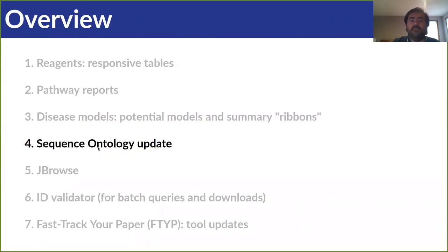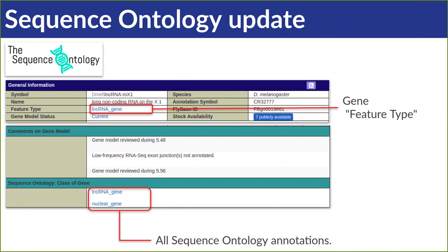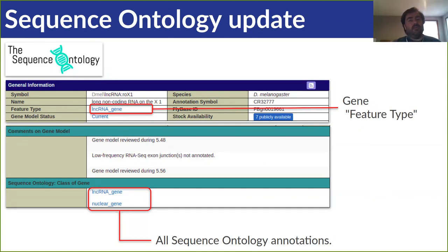Now I'll tell you about updates to the sequence ontology at Flybase. The sequence ontology is a set of controlled vocabulary terms used by many biological databases to annotate and classify genomic features like genes and sequence variants. On a Flybase gene report, there's a section containing gene sequence ontology annotations, and at the top of the gene report the primary sequence ontology annotation is shown as the feature type. We've recently updated the version of the sequence ontology we're using. While we update other ontologies like Fly Anatomy or GO ontologies all the time, this one is special because we've gone about 15 years without an update, owing to vast and deeply embedded technical dependencies related to this ontology. This is a big update that should be quite noticeable to users.